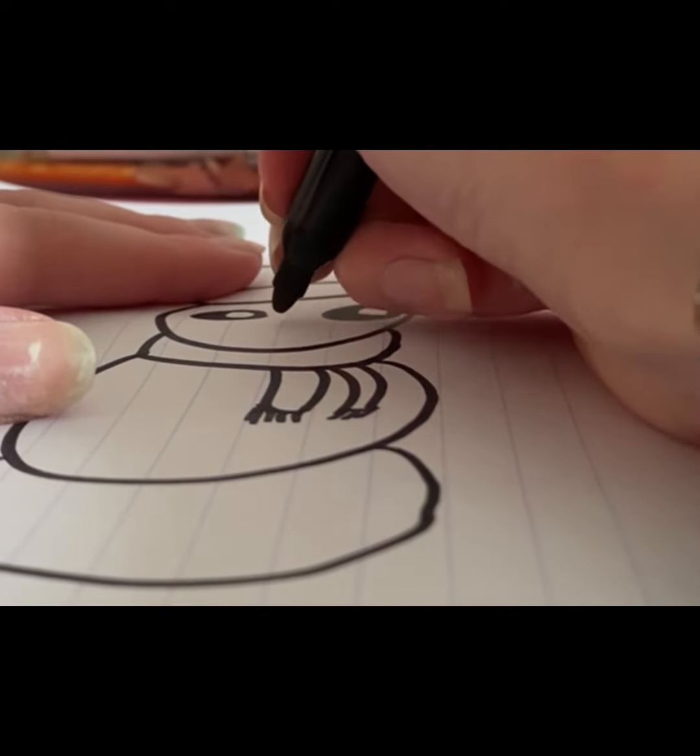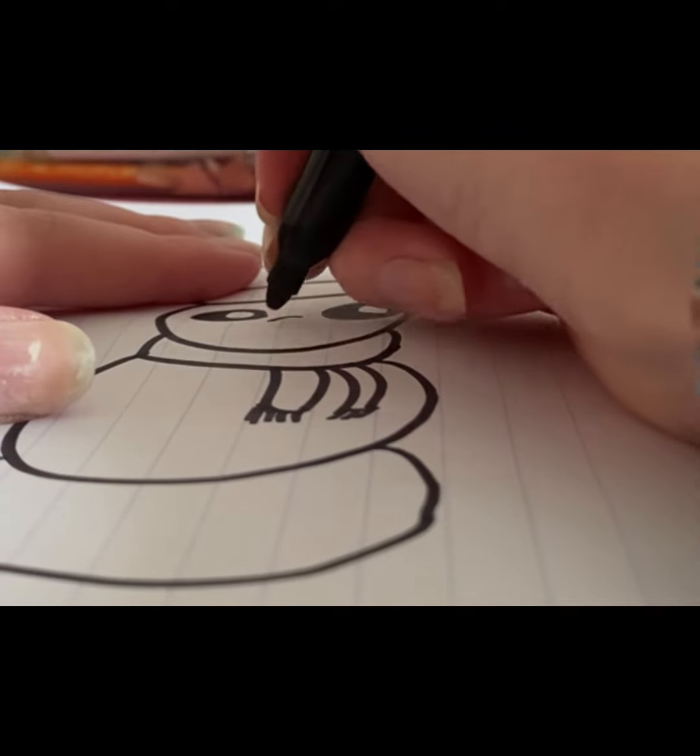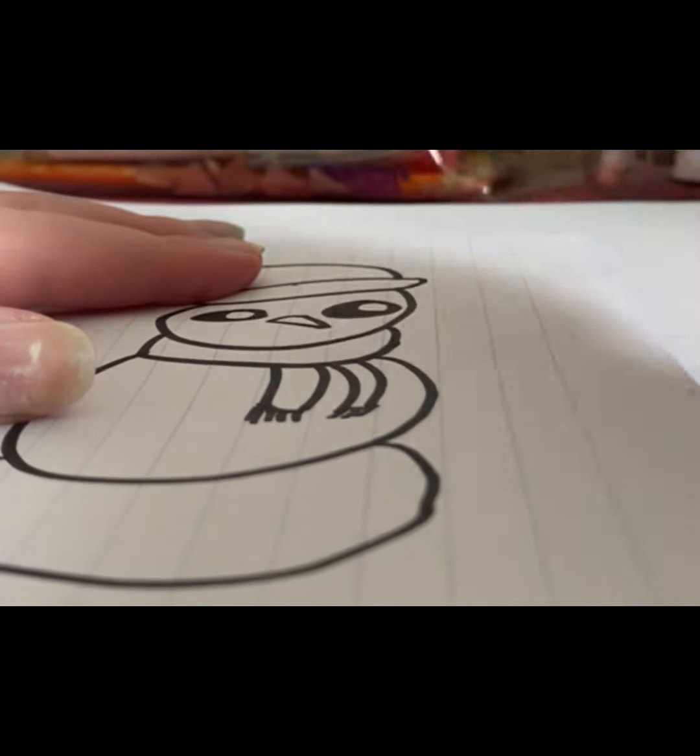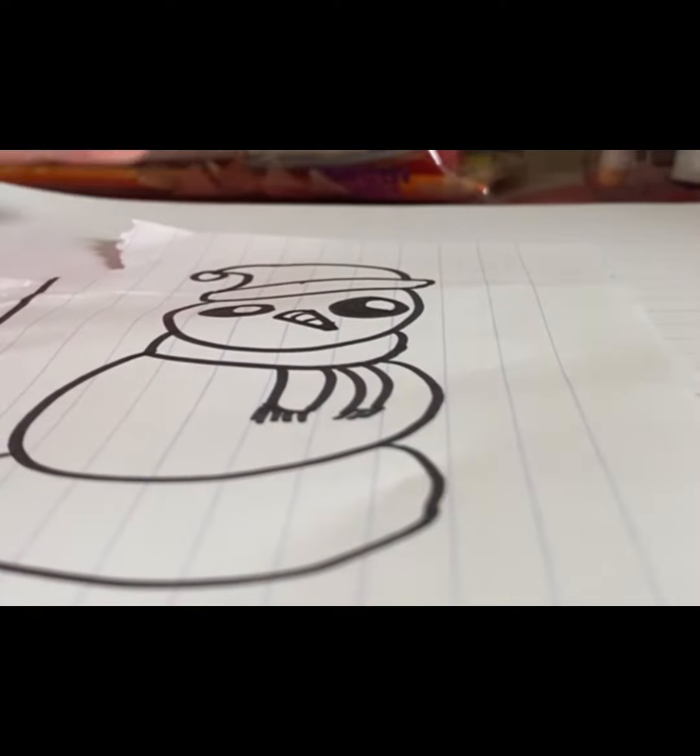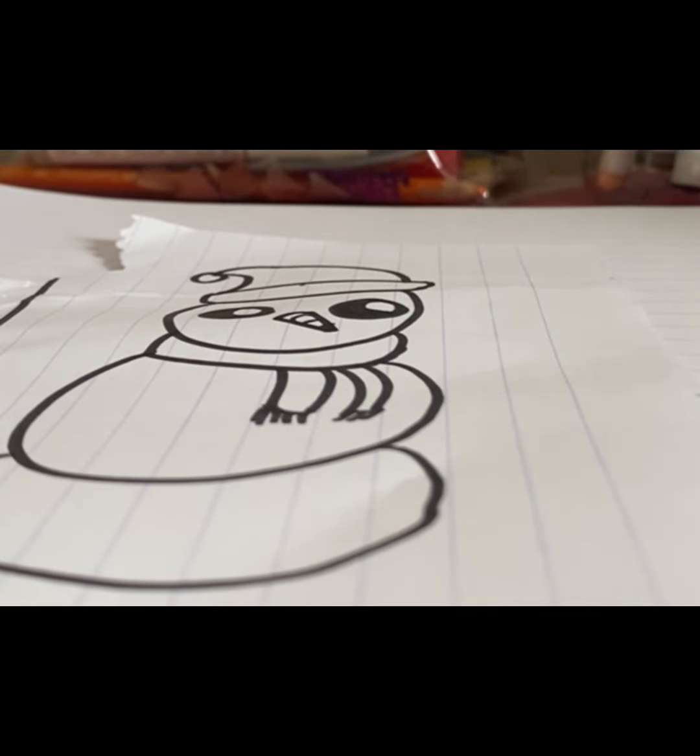And then for the nose, you're going to do a curved line like that and point right. You don't have to do it to the side, but I tried doing it downwards and it looks like an owl's beak.